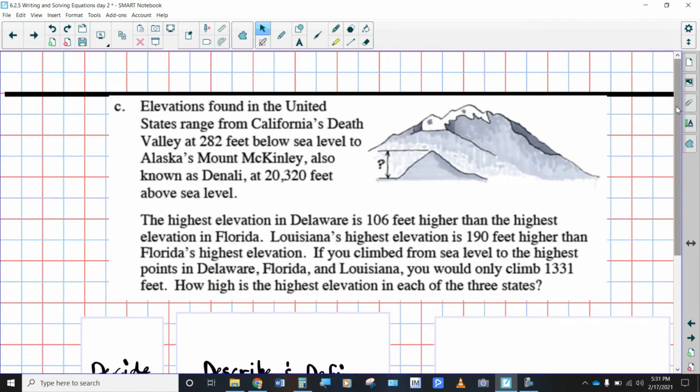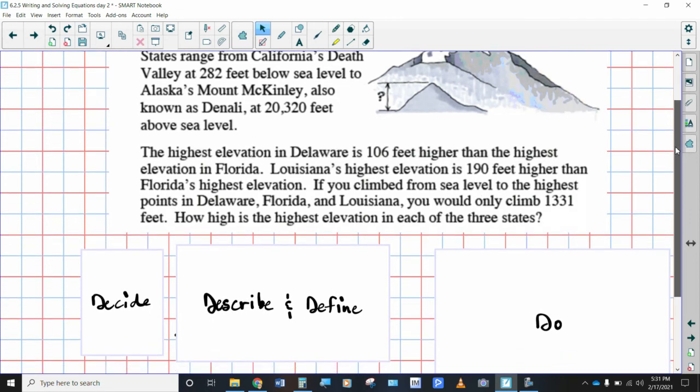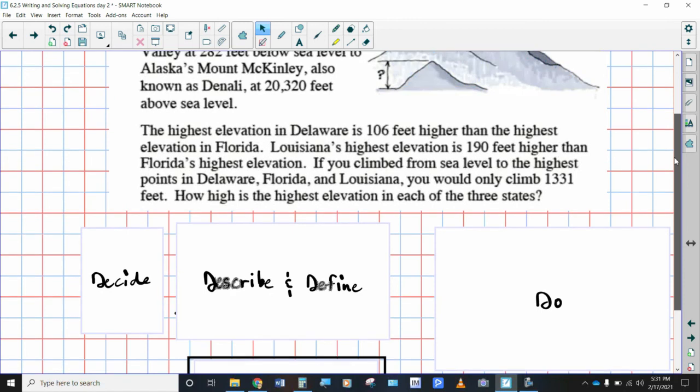Now, I'm going to let you read all of this and pull up the information on your own. I'll read this part. Elevations found in the United States range from California's Death Valley, which is 282 feet below sea level, to Alaska's Mount McKinley, which is 20,320 feet above sea level. Wonderful. So a little bit of a geography sort of lesson here. Now we get into the nuts and bolts. This problem is about three states and their highest elevation. Go ahead and read through all of that. If it's hard to see on the video, you can always go to the online book and read it out of the online book.